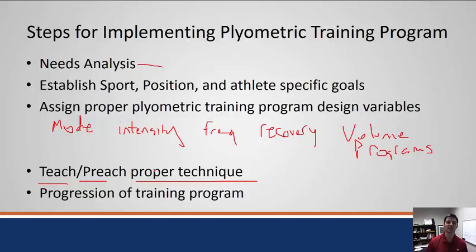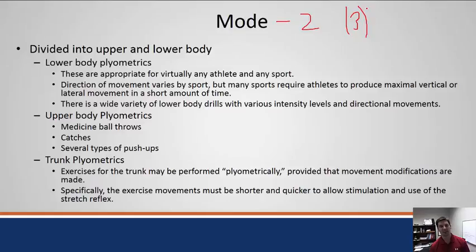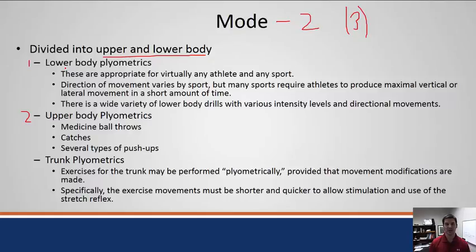Just like resistance training, we need some type of progression — increasing one or more variables as training proceeds. Starting with mode: for plyometrics there are essentially two categories. Lower body plyometrics are appropriate for almost any athlete in any sport — whether football, basketball, soccer, or track. The majority of athletic achievements involve some type of power generation by our legs, so these will be the most common in any program you design.